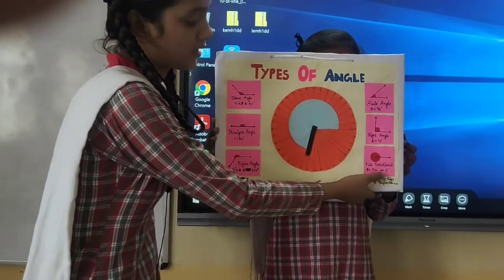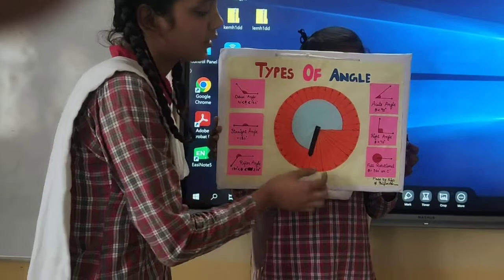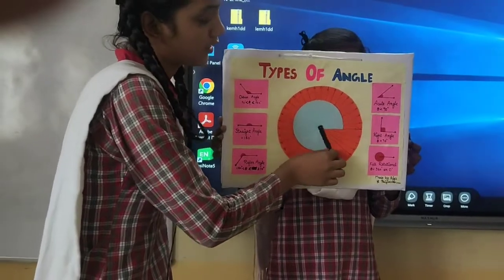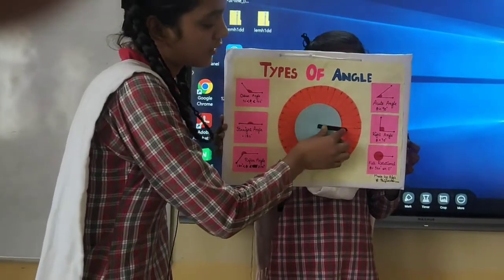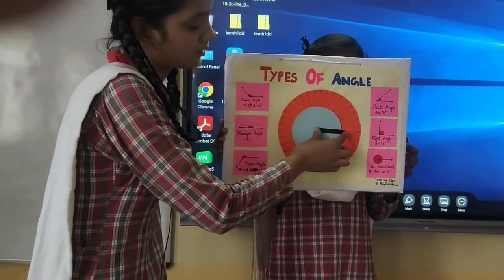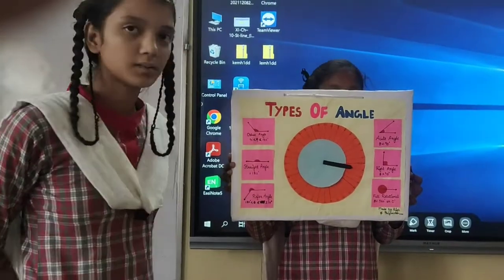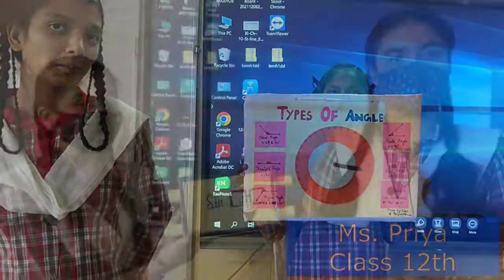And the last is the full rotational angle. The full rotational angle is 360 degrees. Thank you.